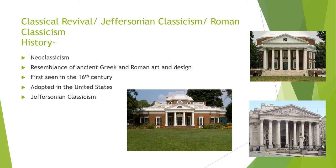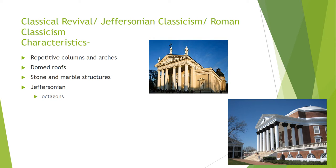Jeffersonian classicism was Thomas Jefferson's take on classicism. He designed his own house, the Monticello, the buildings at the University of Virginia that he founded, and other political friends' houses. Some characteristics of this style are that it resembles ancient Greek and Roman architecture, with repetitive columns and arches, the use of domed roofs, and stone and marble structures. Jefferson also incorporated octagonal forms in his designs.